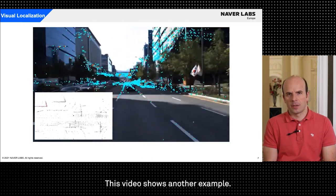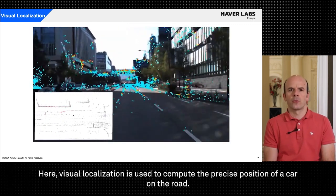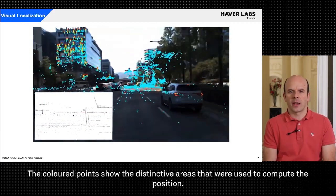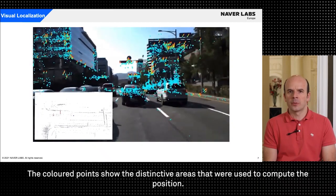This video shows another example. Here visual localization is used to compute the precise position of a car on the road. The colored points show the distinctive areas that were used to compute the position.